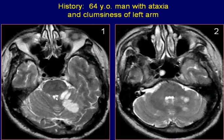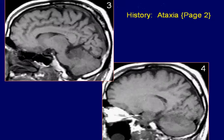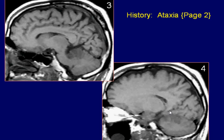Minimal mass effect is seen on the fourth ventricle. Sagittal T1-weighted images of the brain demonstrate the lesion as a hypo-intense area involving only the antero-superior aspect of the left cerebellum with a wedge-shaped appearance.